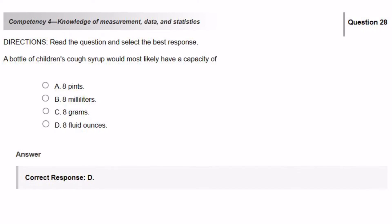A bottle of children's cough syrup would most likely have a capacity of 8 pints, 8 milliliters, 8 grams, and 8 fluid ounces. So in order to answer this question, you just have to know the difference between all of the units of measure. So 8 pints is like equivalent to a gallon. 8 milliliters is equivalent to 0.03 cups.